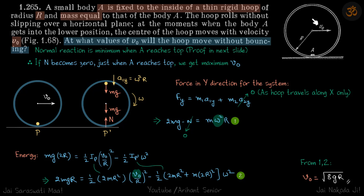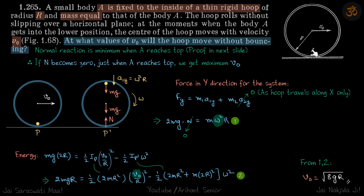Let's take A to the top, find the value of omega, so we can get the centripetal acceleration of body A. Because the acceleration of the whole loop toward the center is zero, the centripetal acceleration of A when it is at the top is the only acceleration, and we use that to write F = ma.